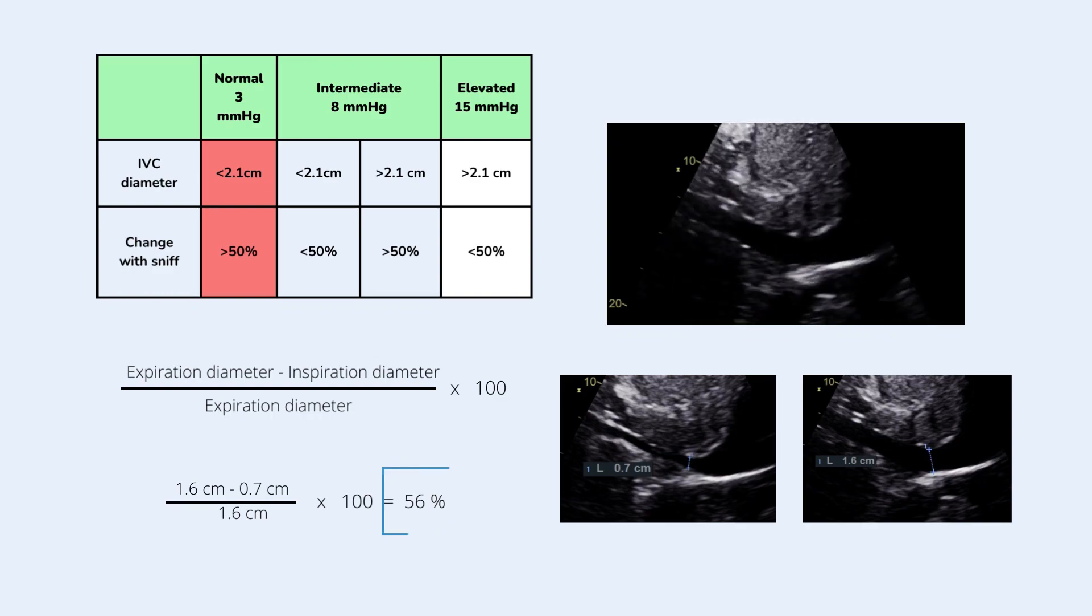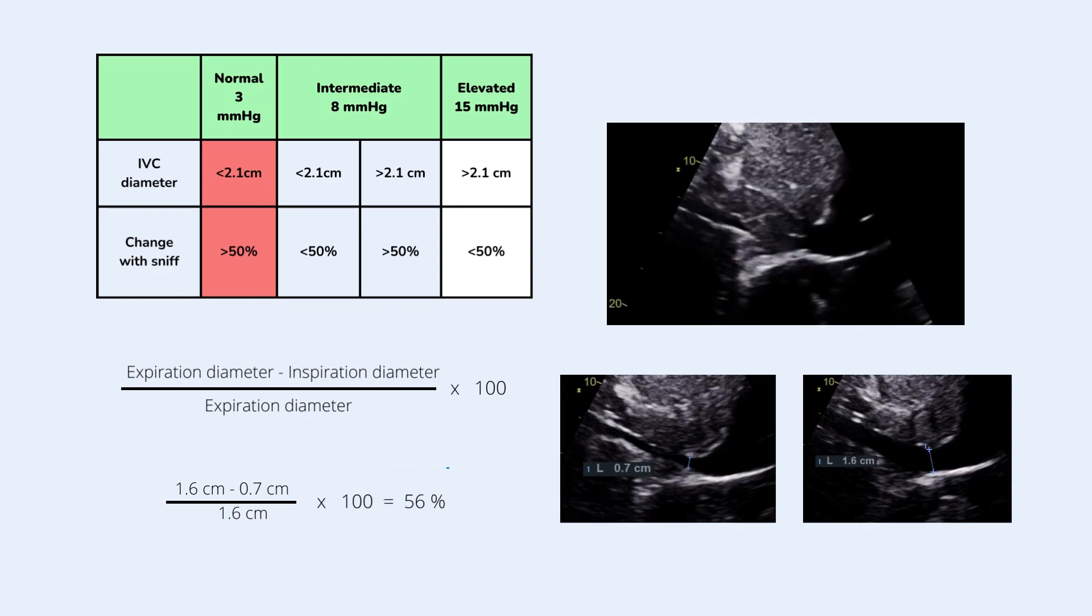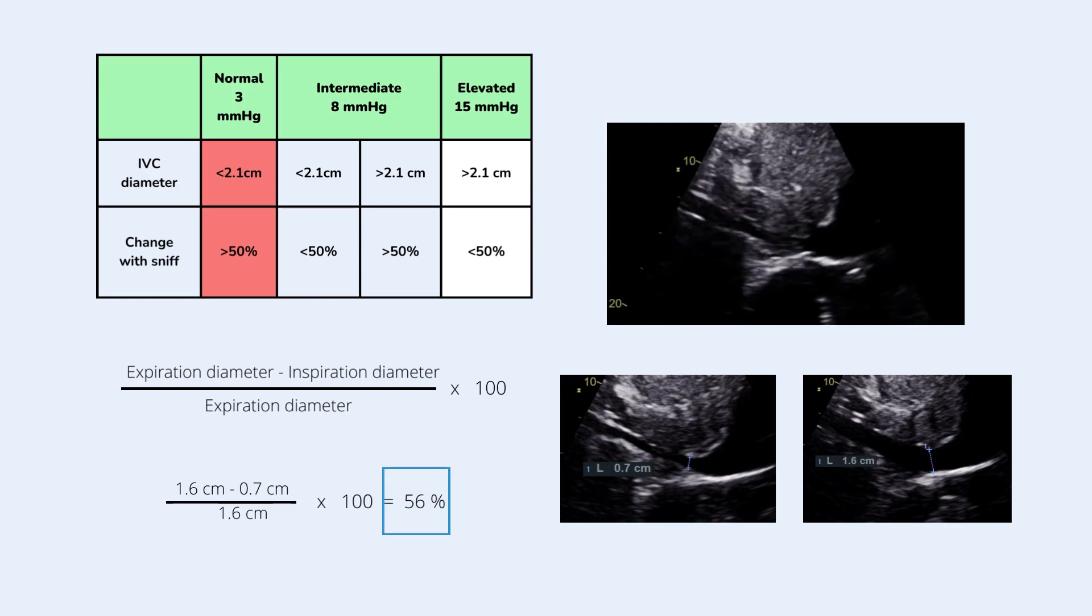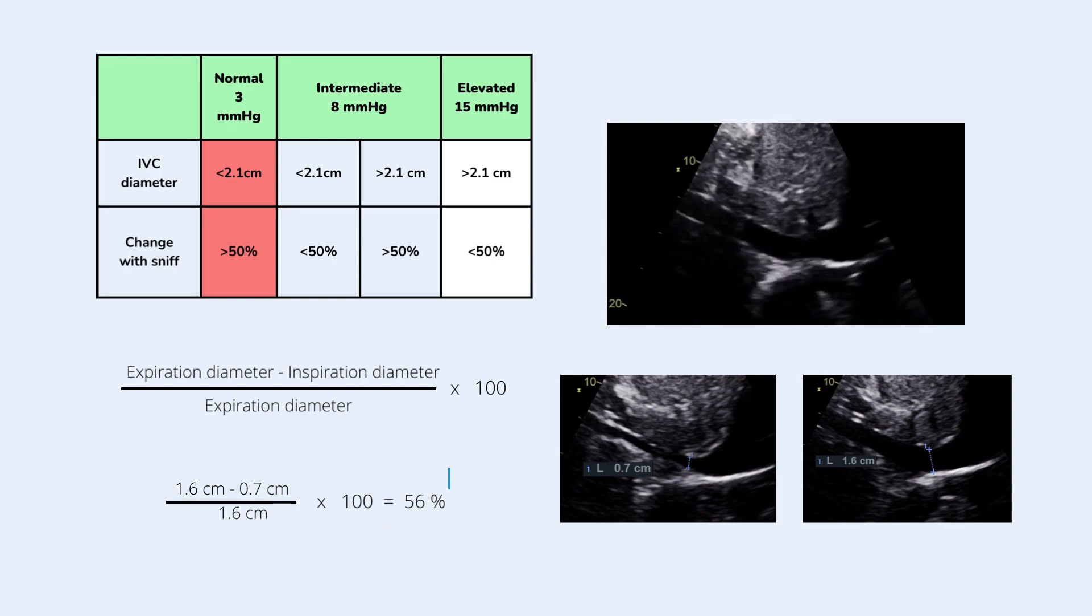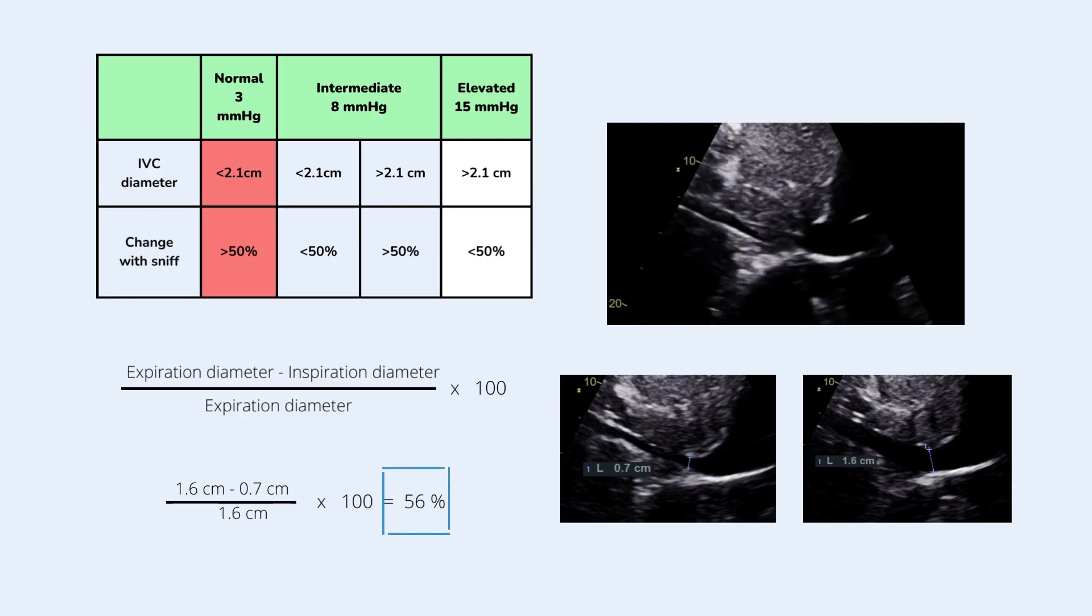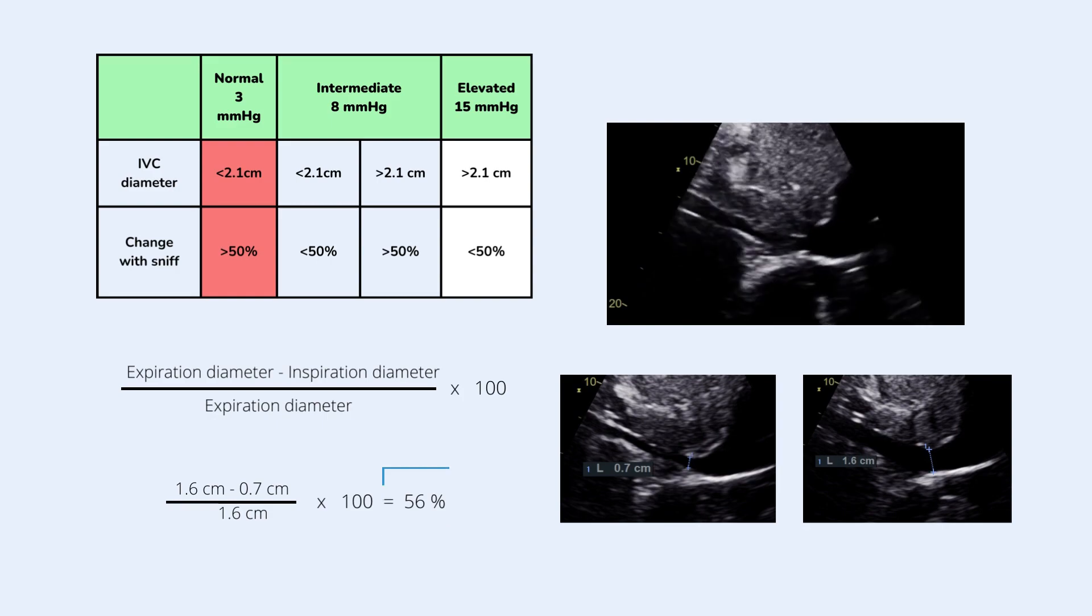A diameter of 1.6 cm at expiration and 56% inspiratory collapse during sniff will have an estimated RA pressure of 3 mmHg. Therefore this patient has a normal RA pressure.